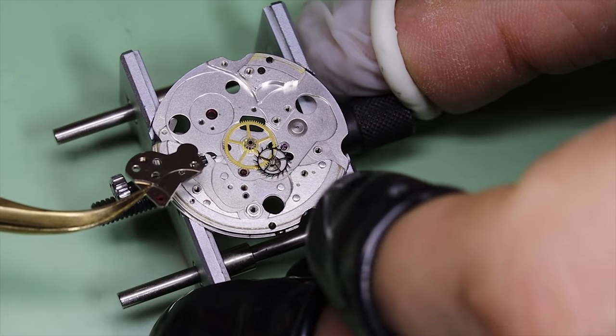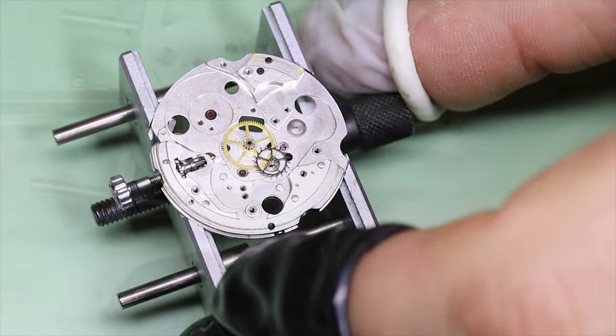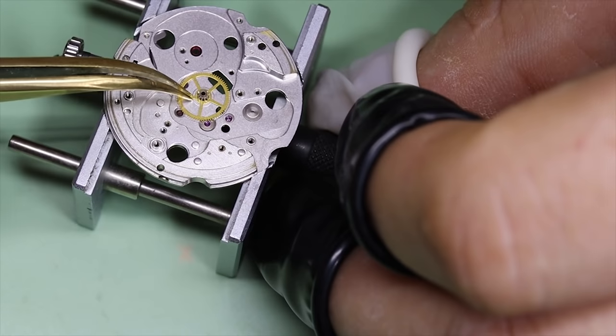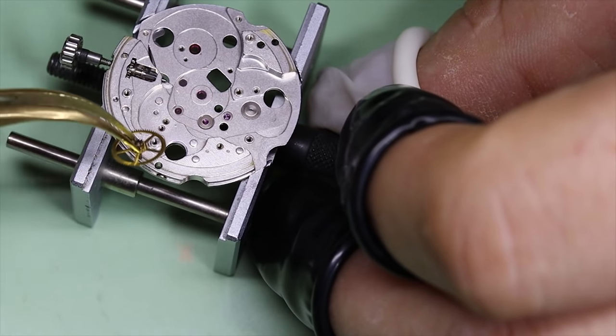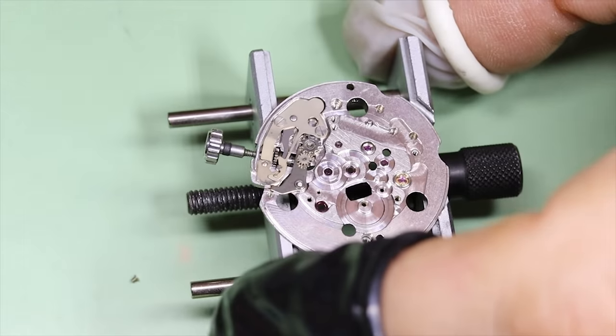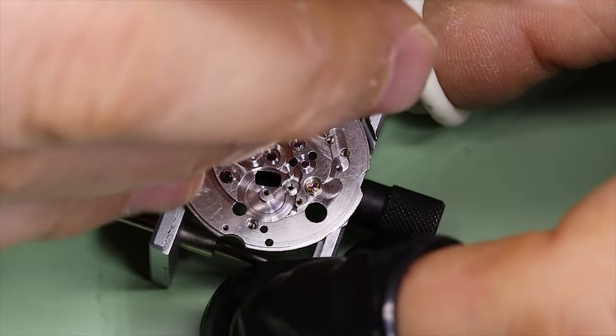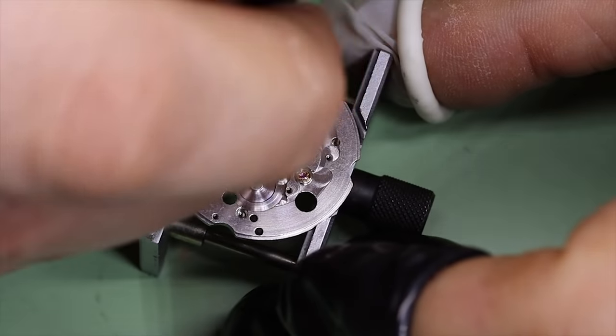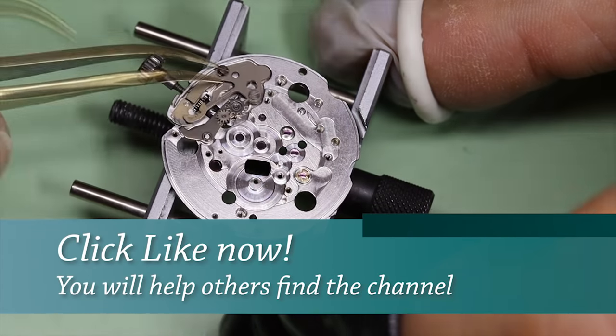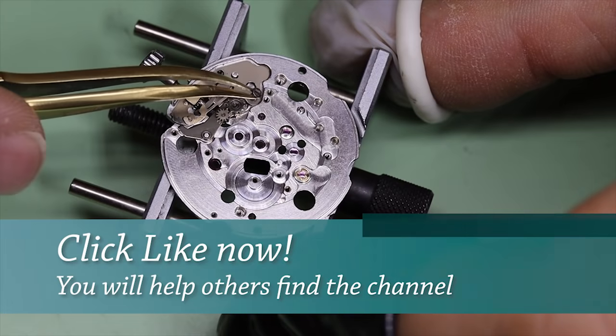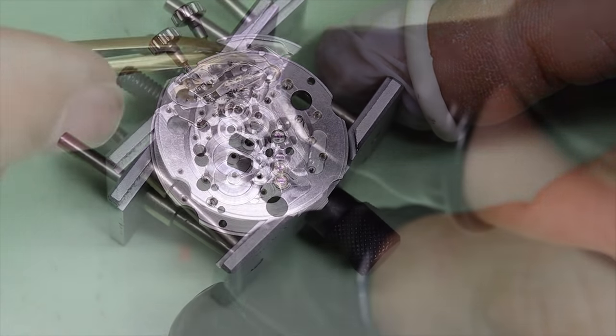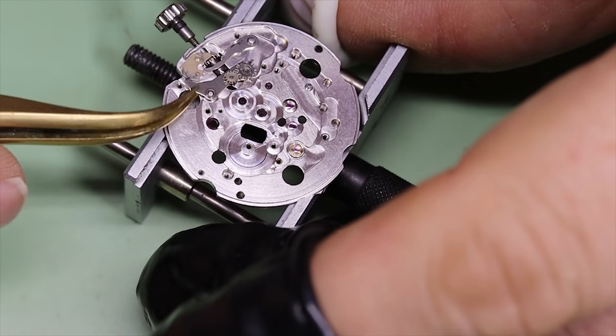36,000 is of course twice as much as 18,000, so you will have 10 beats per second or 10 ticks and tocks per second. The seconds hand will move 10 times per second and it will look very smooth. Now that's what you can see. Apart from the aesthetics, the real reason why the Swiss and the Japanese were trying to be the first ones to come up with a 36 bph movement back in the mid 60s was because you get a certain gyro effect as well.